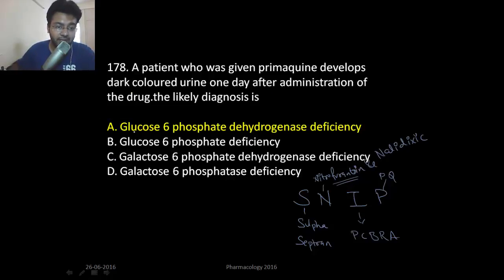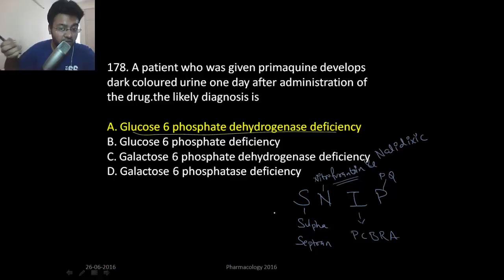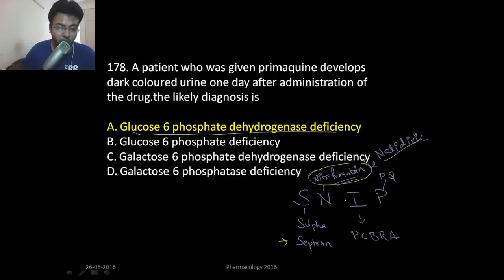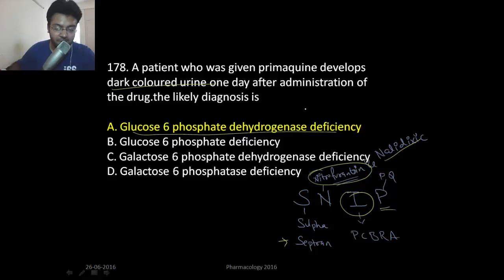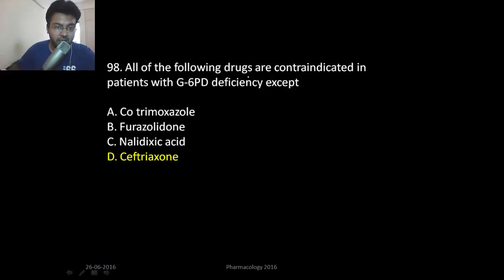Drugs contraindicated in G6PD deficiency include the SNIP drugs — sulfa derivatives like sulfonamides and dapsone (also a sulfa derivative), cotrimoxazole (septron), nitrofurantoin (a urinary antiseptic), nalidixic acid (an older fluoroquinolone), all enzyme inducers, and the quinolones: primaquine and chloroquine. These cause dark-colored urine in G6PD-deficient patients. For the MCQ 'all of the following are contraindicated in G6PD deficiency except' — ceftriaxone (seftraxone) is not contraindicated.